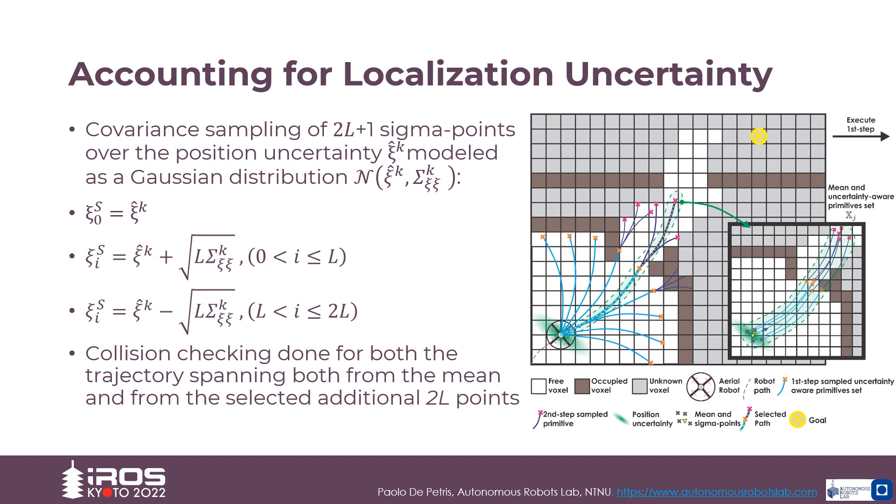Specifically, a set of points are sampled from the covariance, including the mean estimate of the position, and the possible trajectories are calculated with these points as the starting state.